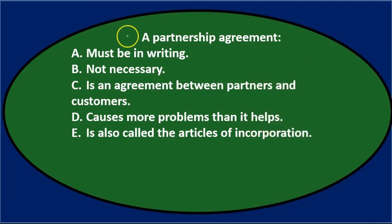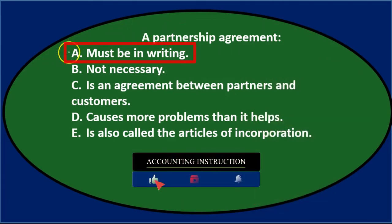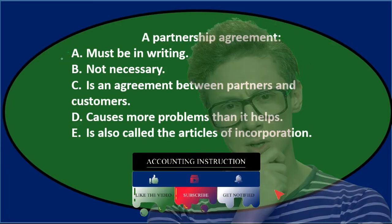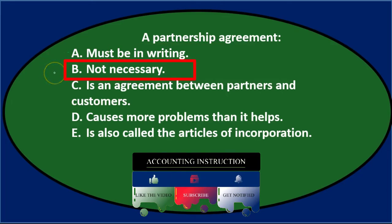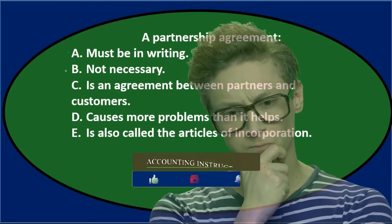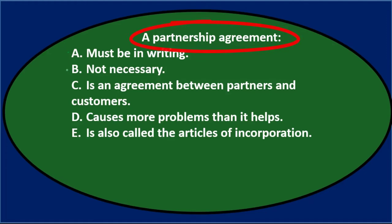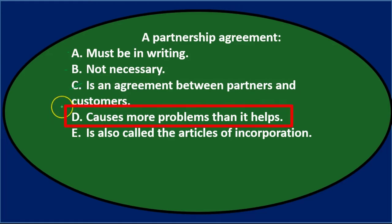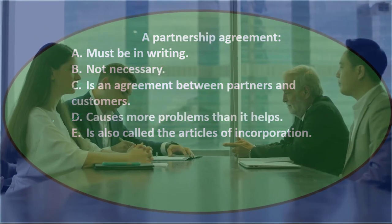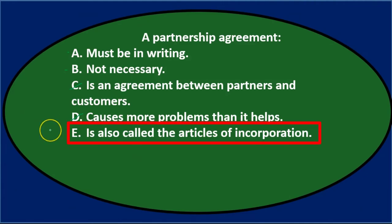A partnership agreement — A) must be in writing, that seems kind of reasonable so let's keep it. B) not necessary, you could think it's not necessary to have a formal written agreement, so I'll keep that. C) is an agreement between partners and customers — the partnership agreement is actually between partners only, not customers, so that's eliminated. D) causes more problems than it helps — that seems like a snarky answer and probably not it. E) is also called articles of incorporation — I'm not sure, so I'll leave A, B, and E.